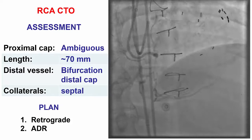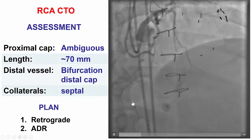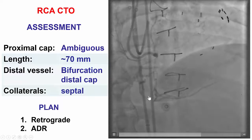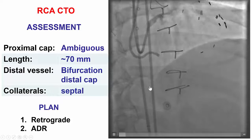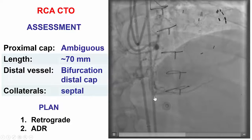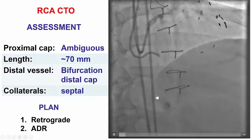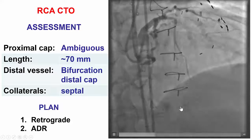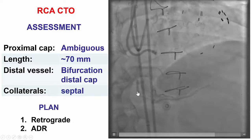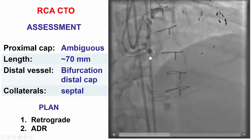Dual injection demonstrating a CTO of the right coronary artery with an ambiguous proximal cap, long occlusion length, although there was some reconstitution of the right coronary artery in the mid-segment, a bifurcation at the distal cap at the PDA and PLV, with a distal vessel filling via septal collaterals, as well as by ipsilateral epicardial collaterals.